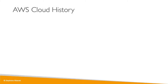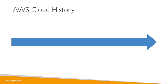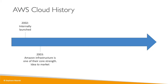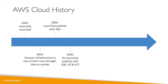Let's look at the history of the AWS cloud. It was launched in 2002 internally at Amazon.com because they realized that the IT department could be externalized. Their Amazon infrastructure was one of their core strengths, and they said maybe we can do IT for someone else. So they launched their first offering publicly, which was SQS in 2004.